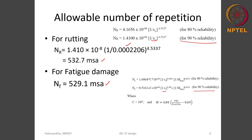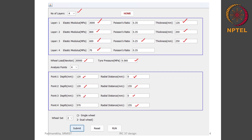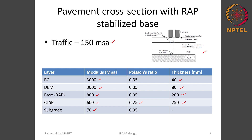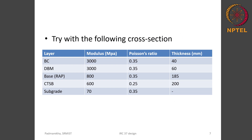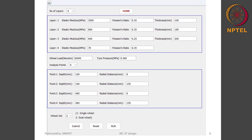We need a pavement cross section to take 150 MSA traffic. Since the current cross section can take over 500 MSA, we can make it more economical by reducing layer thicknesses. For the next trial, we keep BC at a minimum thickness of 40 millimeter, reduce DBM from 80 to 60 millimeter, reduce the base course to 185 millimeter, and reduce the cement treated sub base to 200 millimeter. We will then compute the critical stresses and strain for this new trial section.